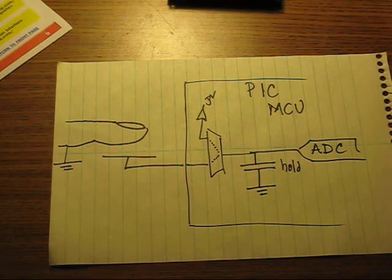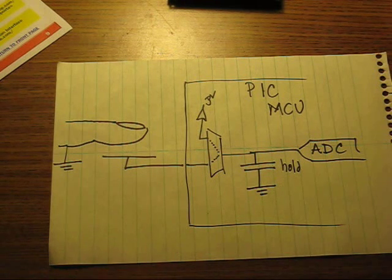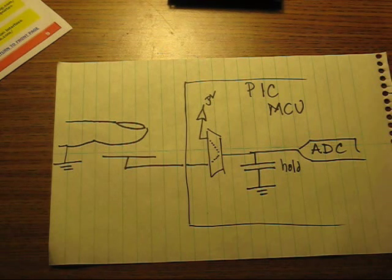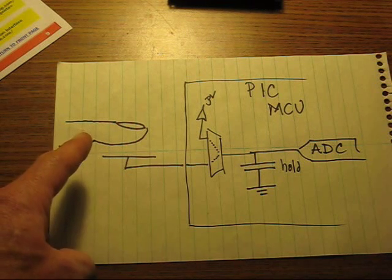This little piece of magic is accomplished by charging the analog-to-digital converter's sampling capacitor and then switching the analog-to-digital channel to the sensor pad. Some of the charge on the sampling capacitor will then flow onto the capacitor formed by the sensor pad and the user's finger.